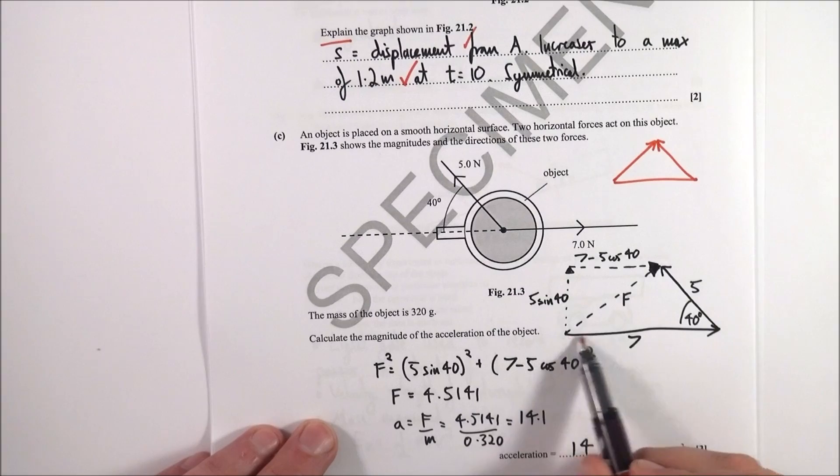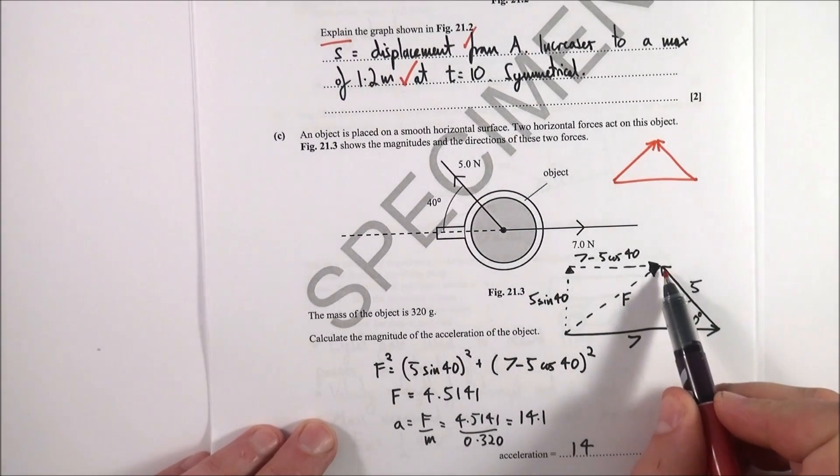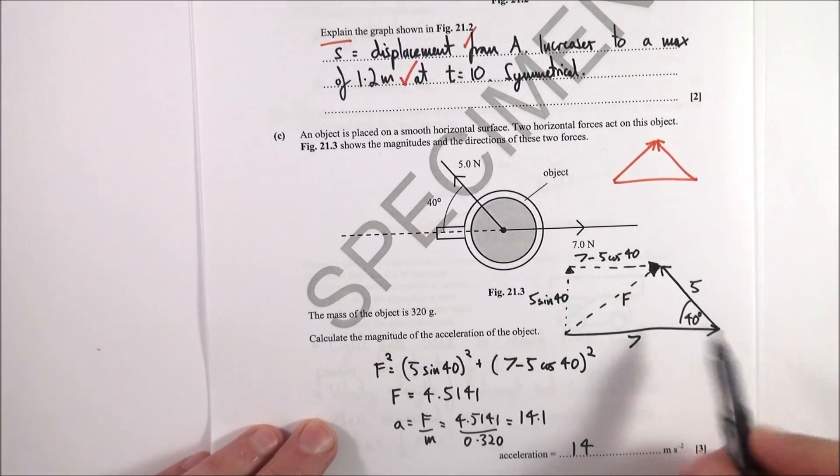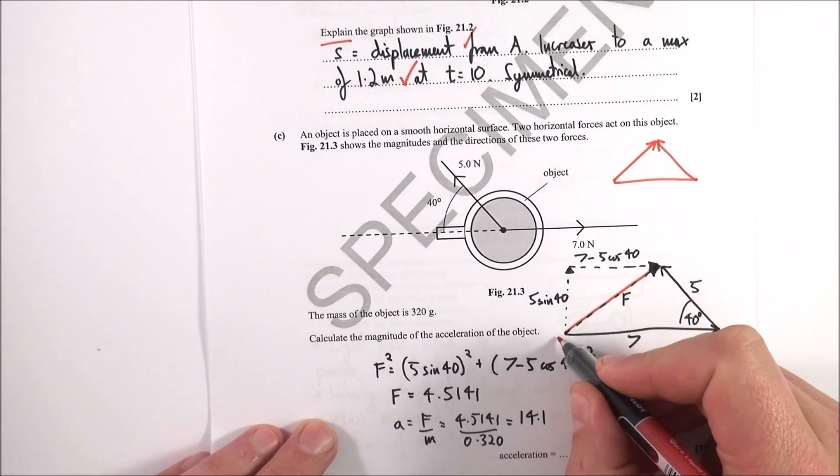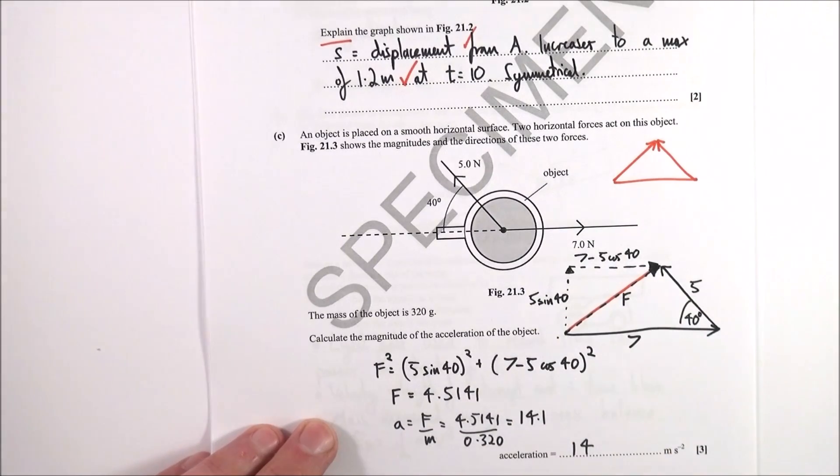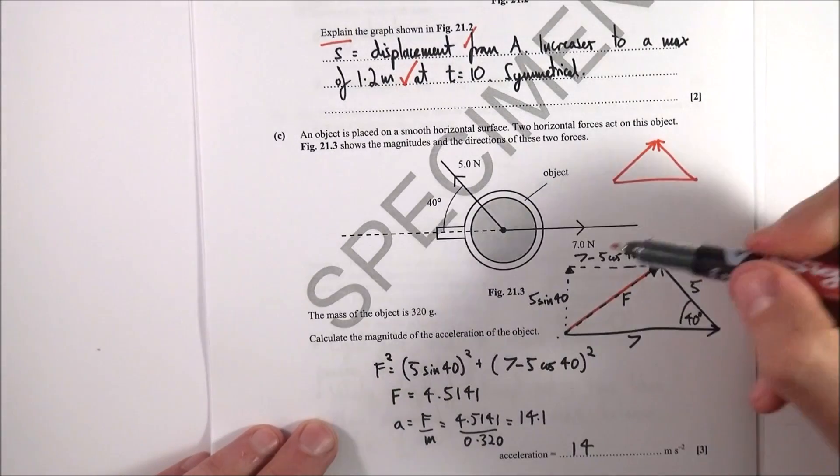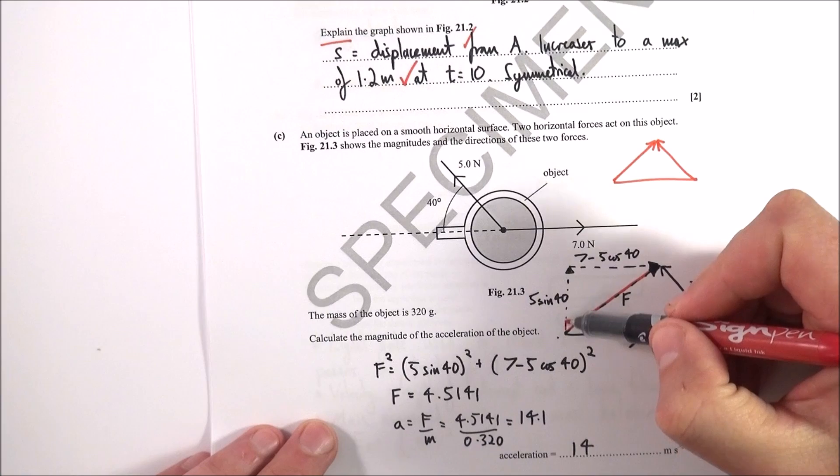Here I have my seven newtons to the right and my five newtons at an angle of 40 degrees. This means this line here is my resultant force between the start of this arrow and the end of that one. So what I then did was I calculated effectively the vertical component of that.